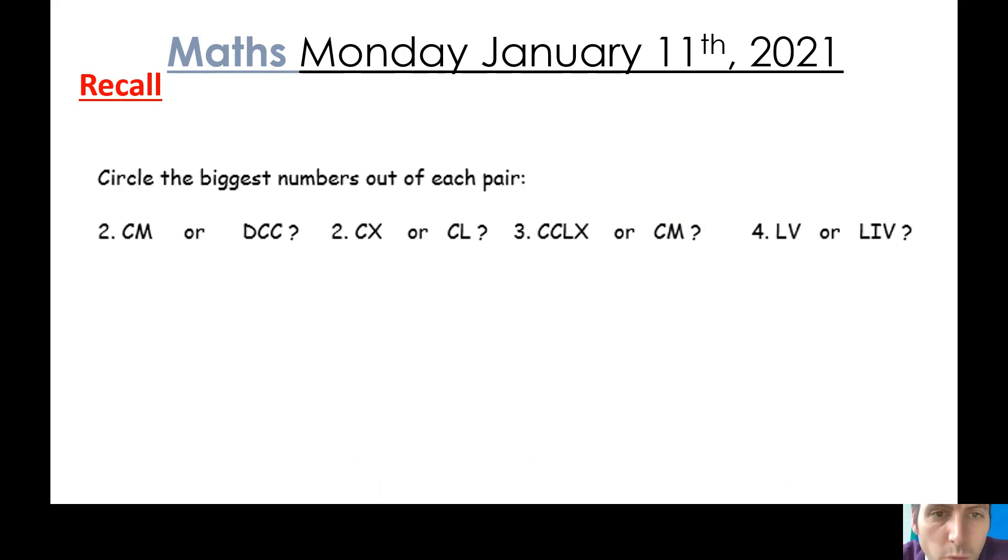So CM means it's 100 less than 1000. And DCC means it's 200 more than 500. So based on that knowledge, which do you think is going to be the larger? Then work through the other ones similarly. So pause the video again, try and work through those please.